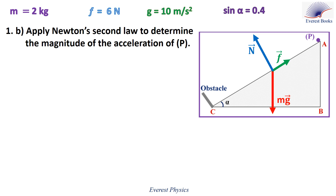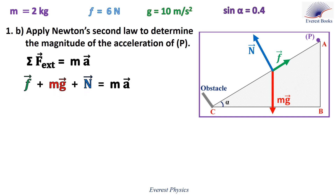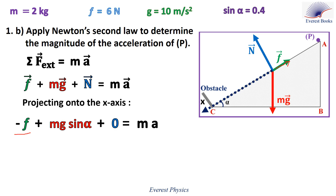Part 1b: Apply Newton's second law to determine the magnitude of the acceleration of P. Newton's second law states that the sum of the external forces, or net force, equals the mass of the particle times its acceleration. The external forces are the friction, the weight, and the normal force. Project these forces along the X axis, oriented positively downward. The friction is opposite to the positive X direction, so its projection along the X axis equals minus F. The projection of the weight along the X axis is mg sine alpha, and N is perpendicular to the X axis, so its projection is zero. Rearranging, we get A equals mg sine alpha minus F, over M.